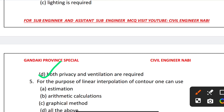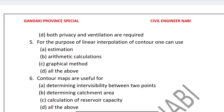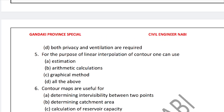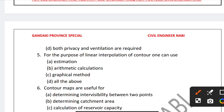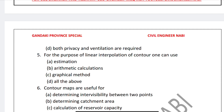Question 5: For the purpose of linear interpolation of contours, which method can we use? Options are: estimation, automatic calculation, graphical method, or all of the above. The correct answer is Option D — all of the above.